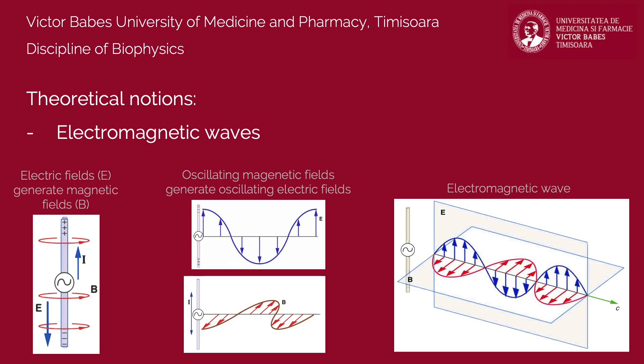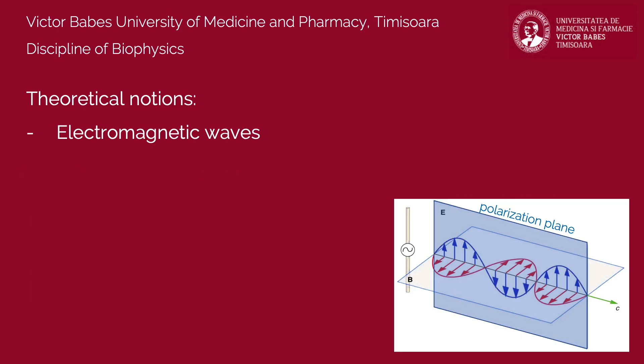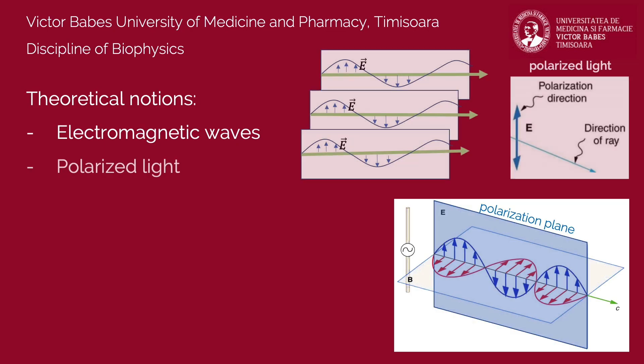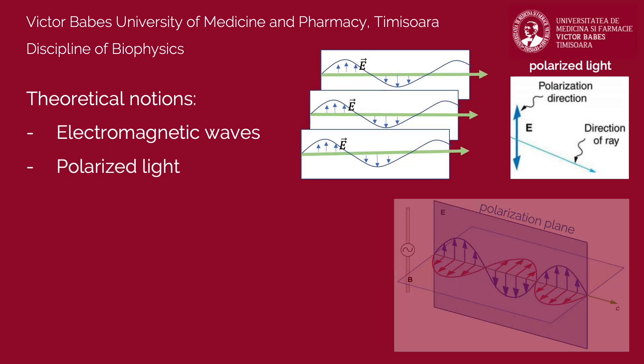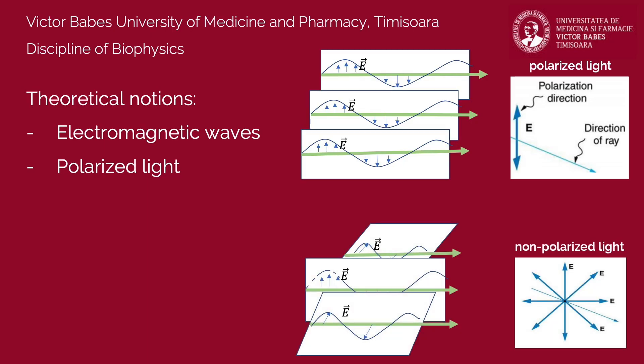The plane in which the electric field oscillates is called polarization plane. Depending on its orientation, we can characterize light beams as polarized, when the polarization planes of all light rays are parallel, or non-polarized, when these planes are oriented in all directions.